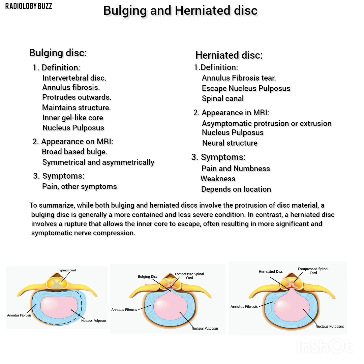To summarize, while both bulging and herniated discs involve the protrusion of disc material, a bulging disc is generally a more contained and less severe condition. In contrast, a herniated disc involves a rupture that allows the inner core to escape, often resulting in more significant and symptomatic nerve injury.